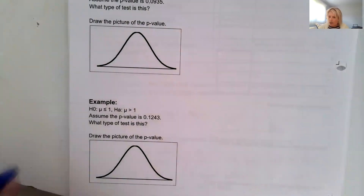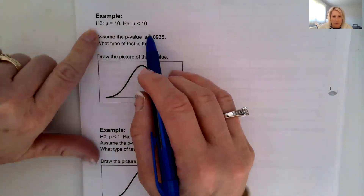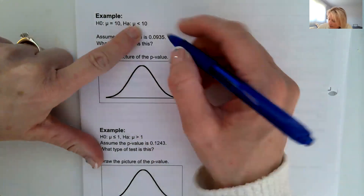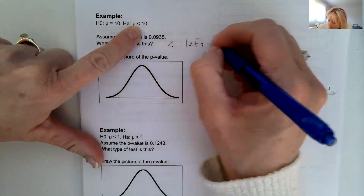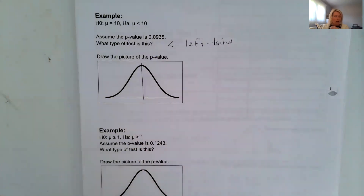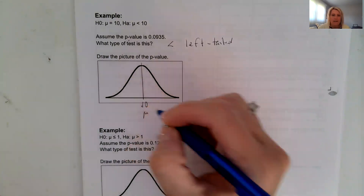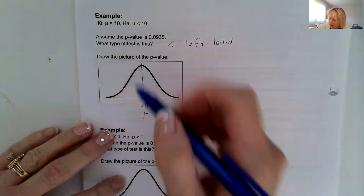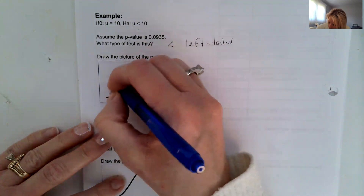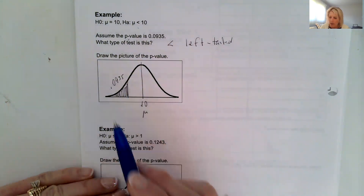So our first example gives us the hypothesis in step one. It says assume the p-value is 0.0935. What type of test is this? It's a less than, so we're going to consider this a left-tailed test. Then it says draw the picture of the p-value. The mean is at 10, and since it's left-tailed, we draw our p-value on the left-hand side. The p-value is 0.0935. We don't know what the sample mean was, but it reflects the p-value of 0.0935.